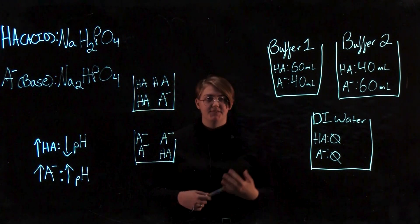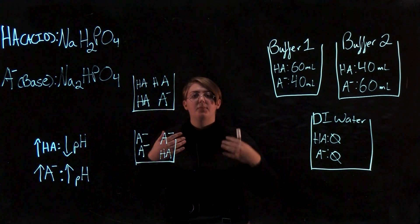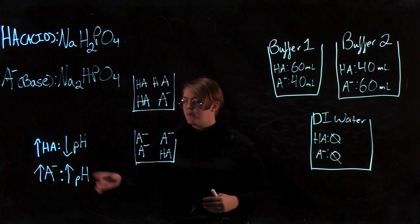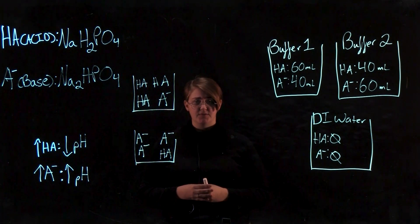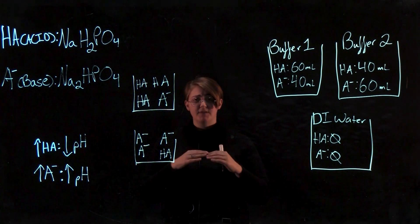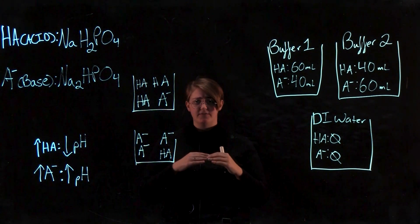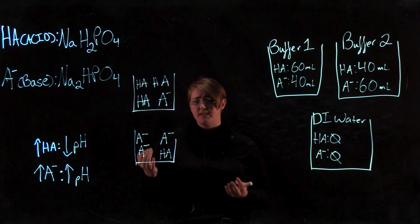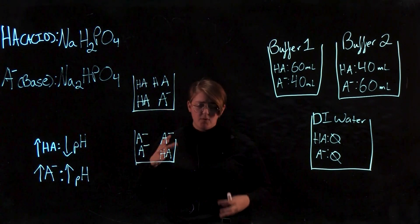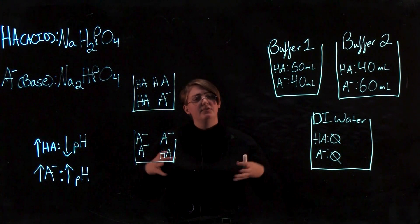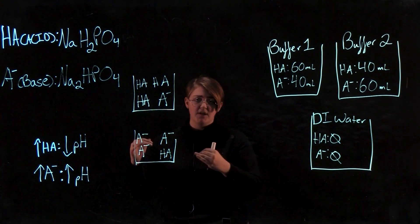When you're adding an acid to solution, you're adding protons. That's what causes our pH to go down. When you're adding protons to a solution, our buffers try to keep that pH level, but depending on what's in them - if we have more of our conjugate base in solution, they're more readily able to absorb and neutralize those extra protons.